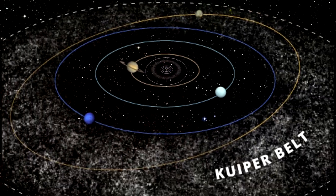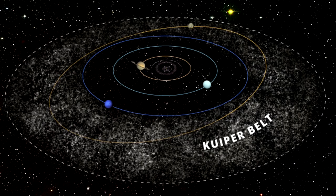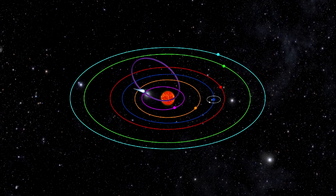Most comets are found in a wide disk beyond the orbit of Neptune in the Kuiper Belt. We call these short period comets because most of the comets from the Kuiper Belt take about 200 years or less to orbit the Sun.